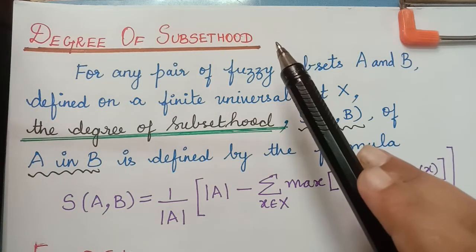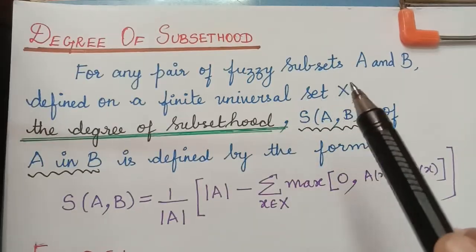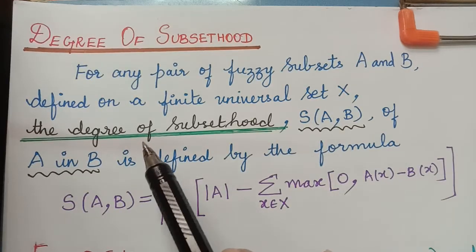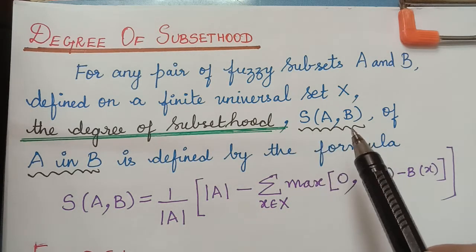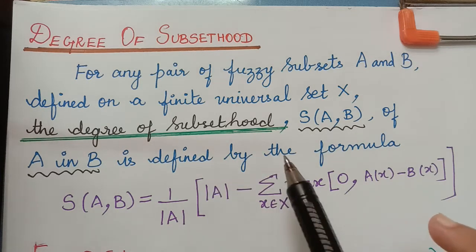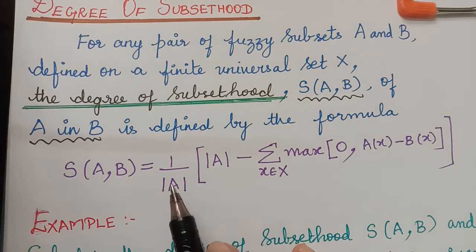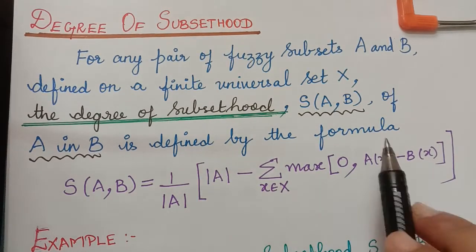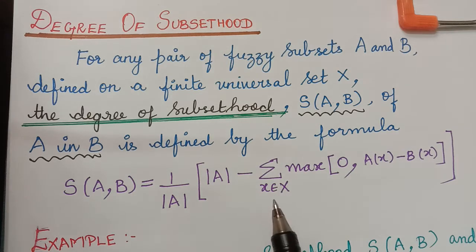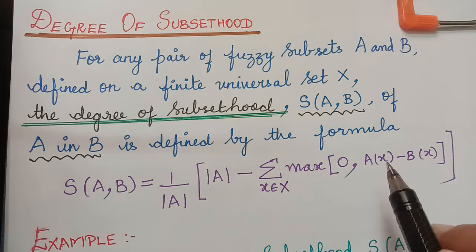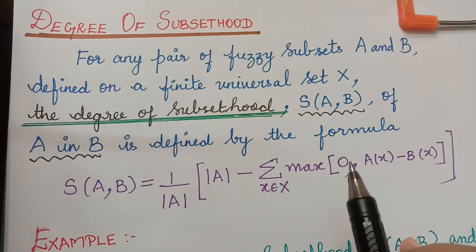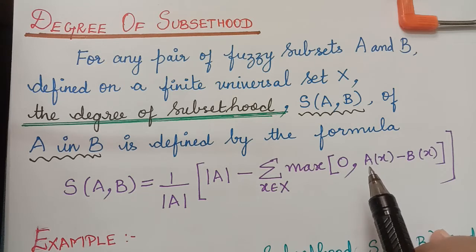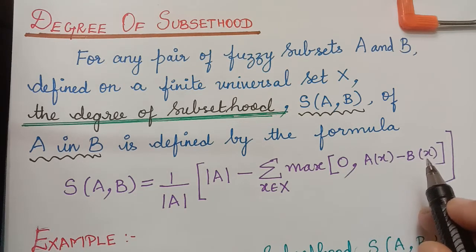What is degree of subsethood in fuzzy set theory? For any pair of fuzzy subsets A and B defined on a finite universal set X, the degree of subsethood S(A,B) of A in B is defined by the formula: S(A,B) = (1/|A|) × (|A| − Σ_{x∈X} max(0, A(x) − B(x))), where |A| is the scalar cardinality of fuzzy set A, A(x) is the membership grade of x in A, and B(x) is the membership grade of x in B.